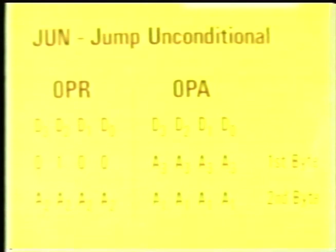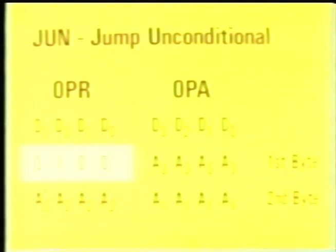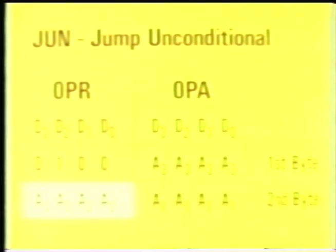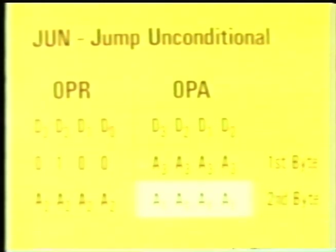Let's look at a typical instruction — the two-byte jump unconditional. It's stored in successive words in ROM. The first four bits are the operation code to specify instruction type. The next 12 bits form the operand — the ROM address of the next instruction to be fetched and executed. The four-bit OPR portion of the first byte contains the jump unconditional op code, and the four-bit OPA portion contains the high-order bits of the jump address. The second byte OPR contains the middle-order 4 bits, and the second byte OPA contains the low-order 4 bits of the jump address.